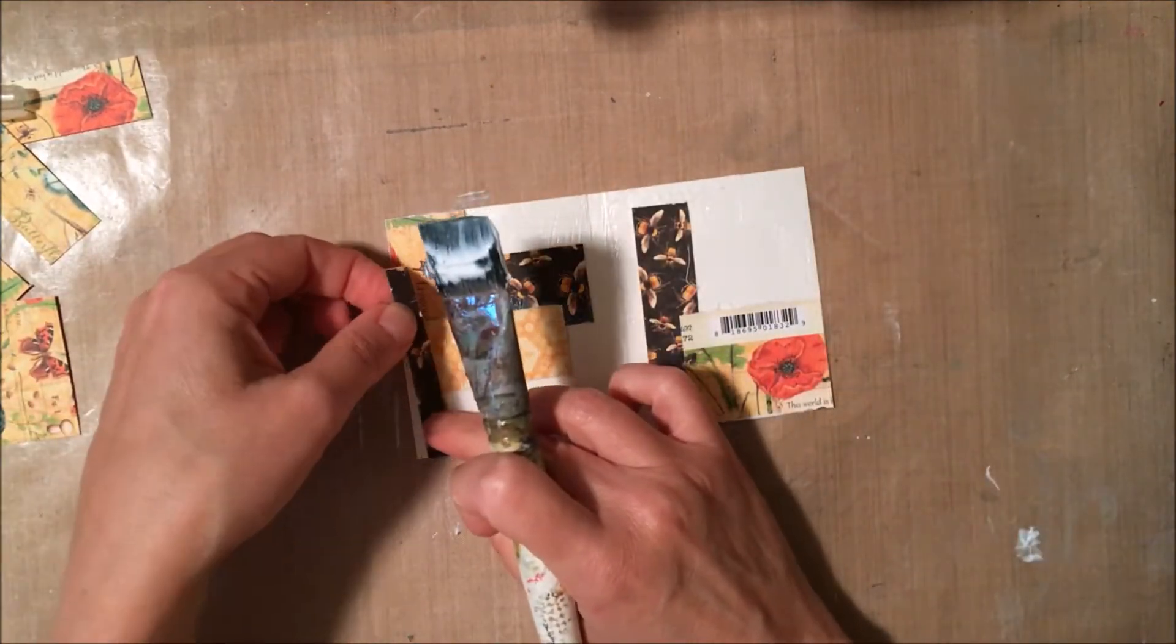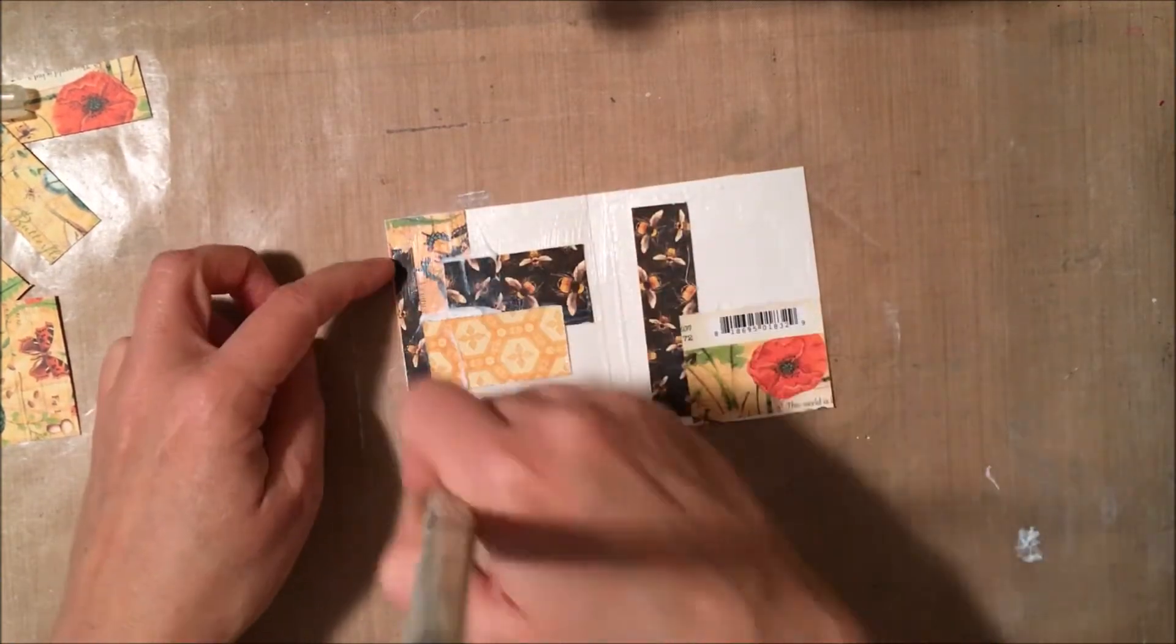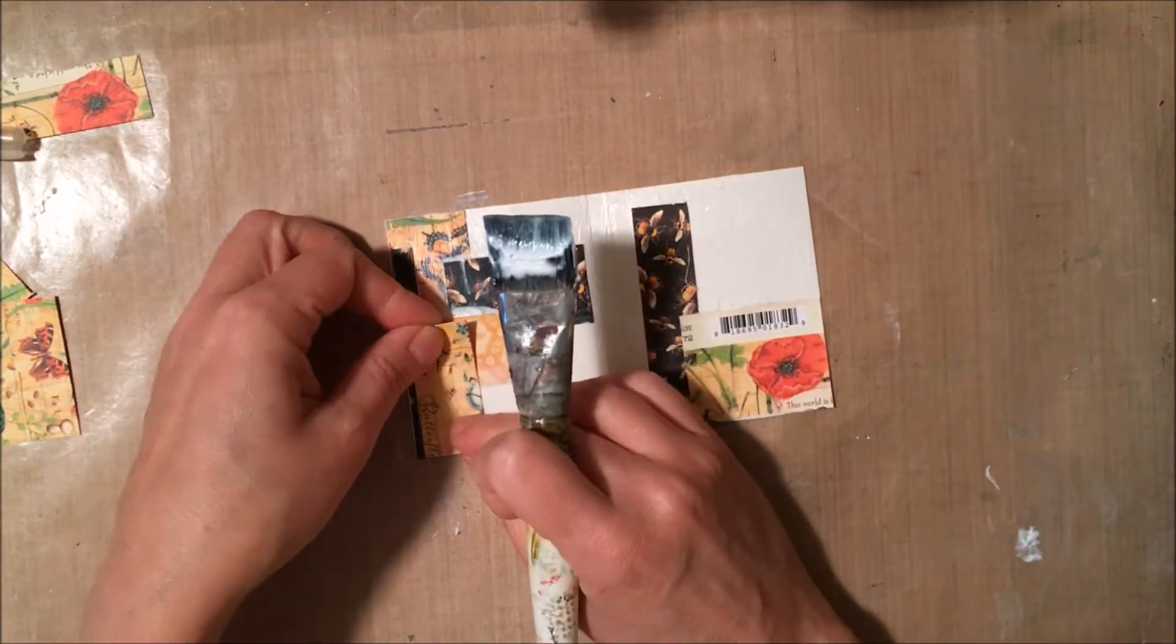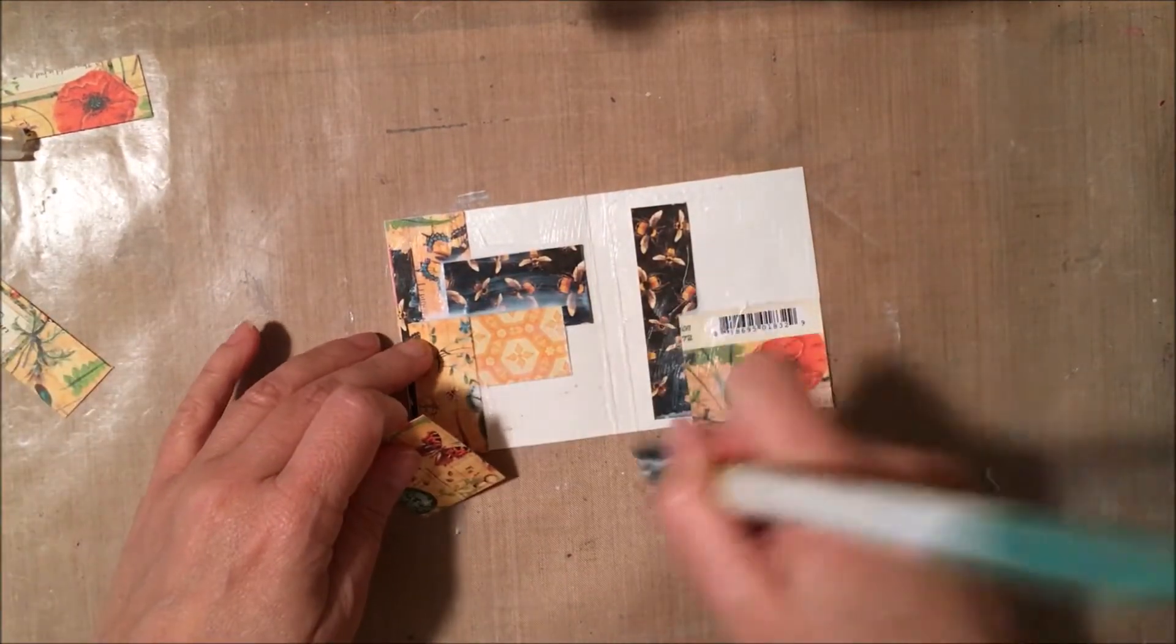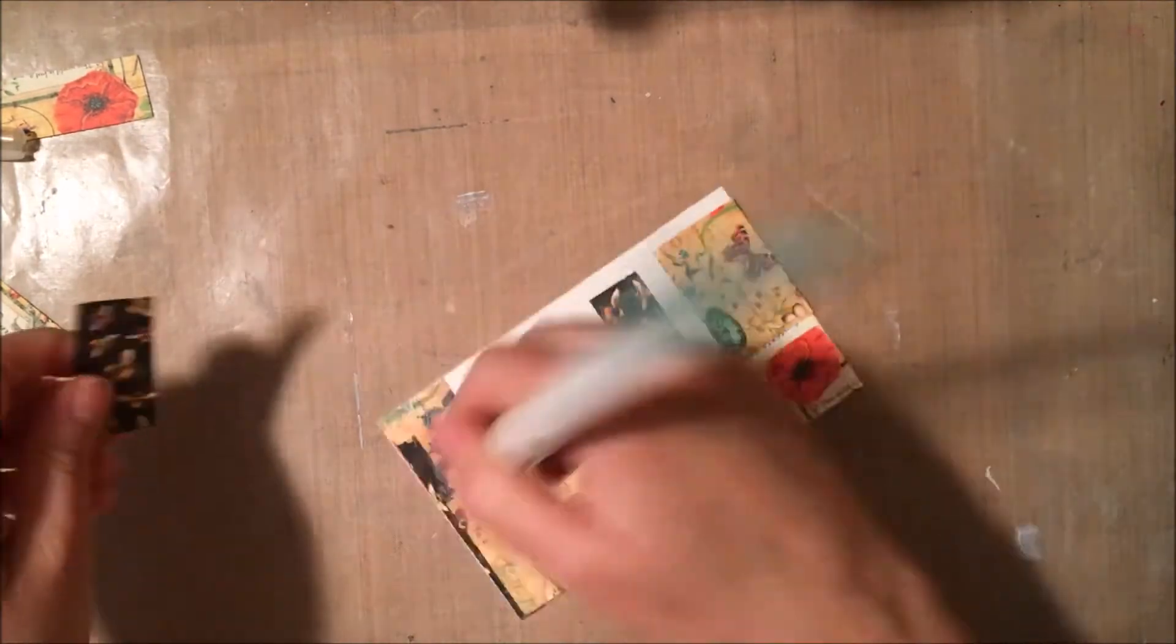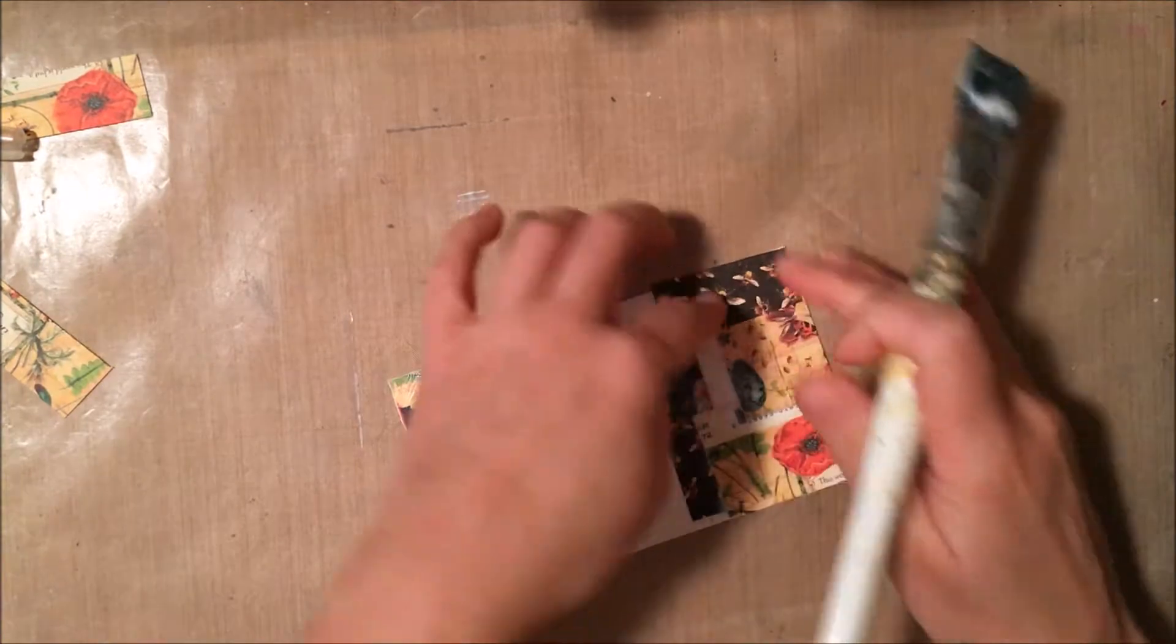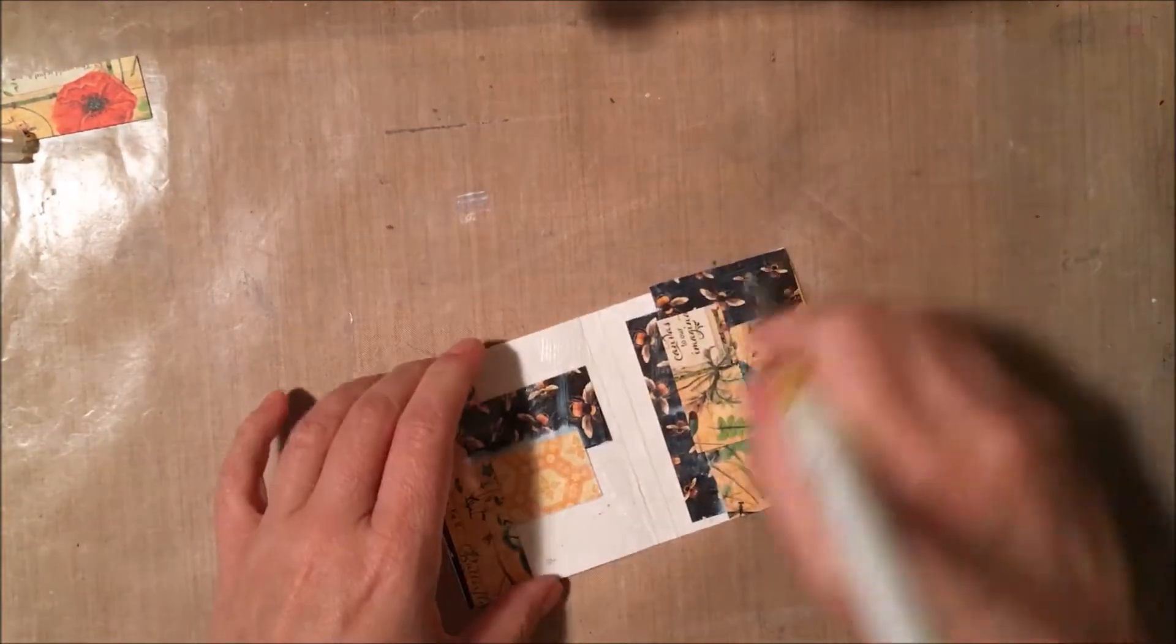All you're really looking for is getting some die cuts or paper pieces, whatever you want, in the background that's going to create texture once we add the paint. Really, the sky's the limit. You can do whatever you want. I really love this idea because it uses up scrap paper. Sometimes when you are working on projects or you have a mini album or cards, you end up with all these little pieces of paper that I tend to hold on to and then I find I never use them again and I have a ton of them.